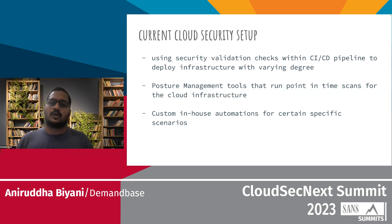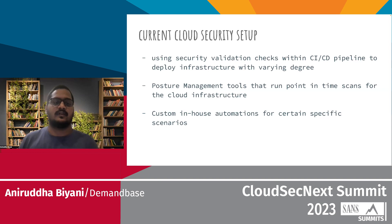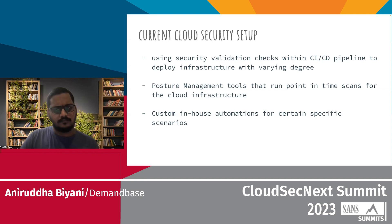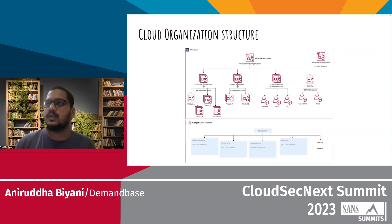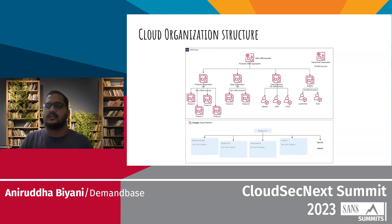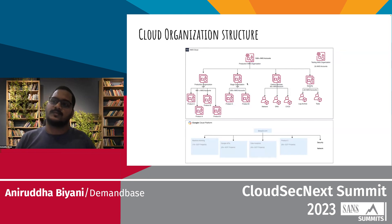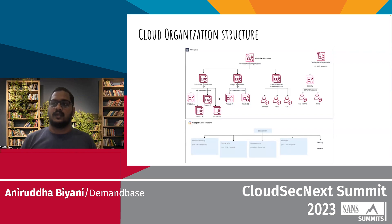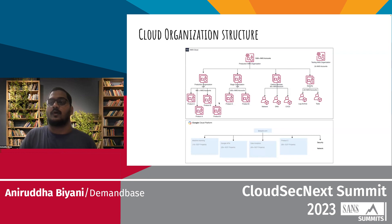Before we move on, I wanted to help you understand the scale of the infrastructure we were working with. Our cloud organization structure had more than 1,500 plus AWS accounts, divided into a bunch of different OUs — central services like CI/CD, DNS, network, security accounts like log archive, tooling, incident response, forensics, and product organizations with staging, production, and dev environments each in segregated OUs. Production had nearly a thousand accounts and formed the bulk of our list.